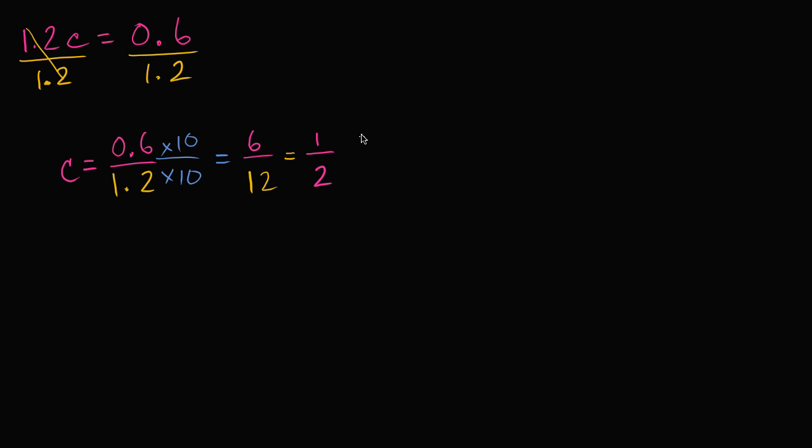Let's say that we have 1 over 4 is equal to y over 12. So how do we solve for y here? We have a y on the right hand side, and it's being divided by 12. Well the best way I can think of getting rid of this 12, and just having a y on the right hand side, is by multiplying both sides by 12.